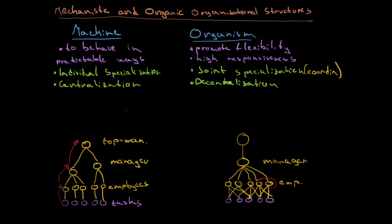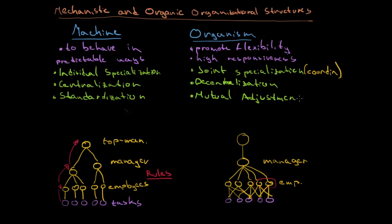The last important difference is standardization in mechanistic companies. These companies have a lot of specific rules. This is quite intuitive, because all employees are supposed to solve the issues necessary at every task, so they really need rules to lead them to the solution. On the other hand, in an organic company we have mutual adjustment.